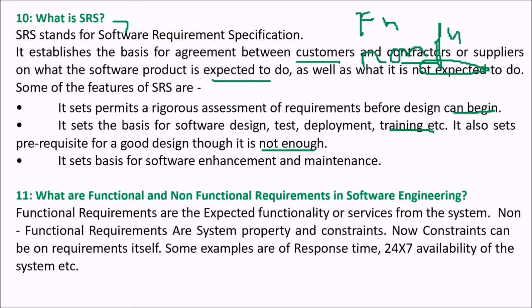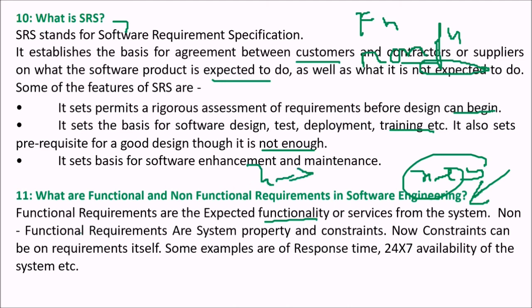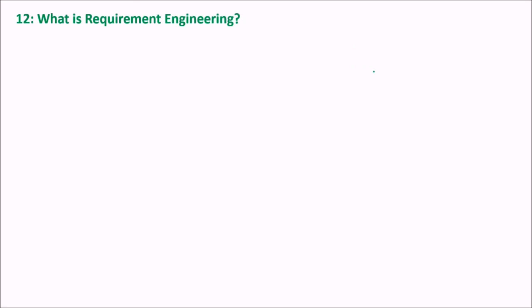What are functional and non-functional requirements in software design? Functional requirements are the expected functionality or services from the system as the user expects — for example, computing x plus y or x minus y. Functional requirements are system properties and constraints. Non-functional requirements specify constraints on requirements such as response time, 24-hour availability of the system, required performance, and required throughput.